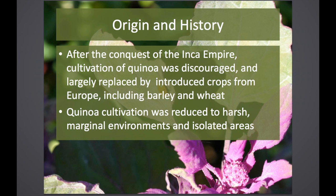After the conquest of the Inca Empire, the cultivation of quinoa was discouraged, primarily because of its religious affiliation with many indigenous people. Quinoa and other native crops were replaced primarily with wheat and barley. As a result, quinoa cultivation was reduced to marginal environments and isolated areas — very harsh areas of low-input farming practices — and that has really shaped the germplasm we have to work with now, with some positive impact on our breeding strategies and worldwide adaptation.